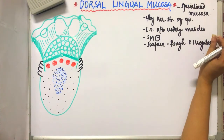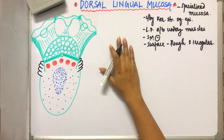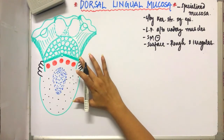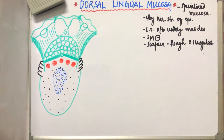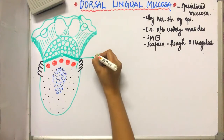Now, coming on to the division of the dorsal lingual mucosa. This mucosa is divided by the V-shaped line which is called the sulcus terminalis. This V-shaped sulcus terminalis divides the dorsal lingual mucosa into two parts.